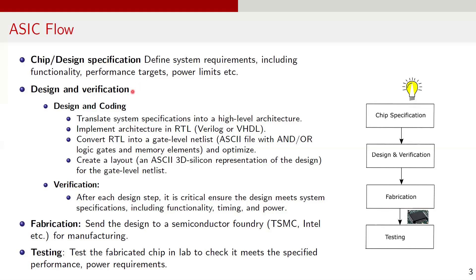The next step includes design and verification. In the design and coding stage, the system specifications are converted into a high-level architecture, and then this architecture is developed into a register transfer level logic using hardware description languages, for example, Verilog and VHDL. This HDL model is then converted to a gate-level netlist, which is an ASCII file containing AND and other logic gates and memories. This netlist is then optimized for area, power, and performance. And finally, the layout, that is an ASCII 3D silicon representation of the design, is created for the gate-level netlist.